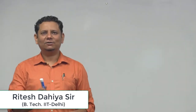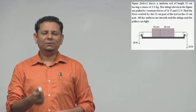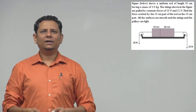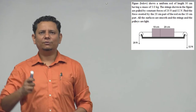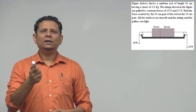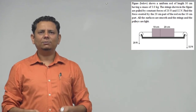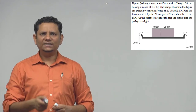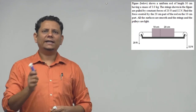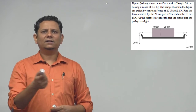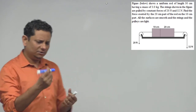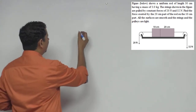The question says: the figure shows a uniform rod of length 30 centimeters having a mass of 3 kg. The strings shown in the figure are pulled by constant forces of 20 Newton and 32 Newton. Find the force exerted by the 20 centimeter part of the rod on the 10 centimeter part. All surfaces are smooth and the string and pulley are light.